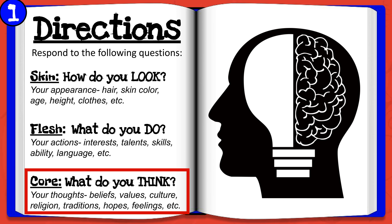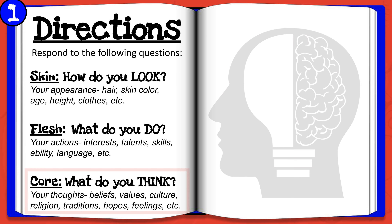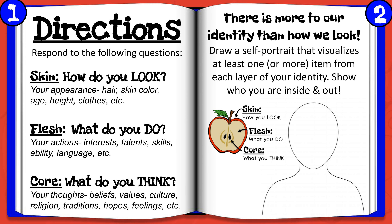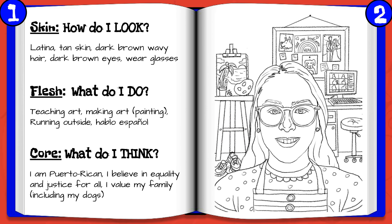Now it's time for you to start reflecting on your own identity. Begin by writing about your outermost layer, tu piel — describe what you look like, your hair, skin color, age, height, clothes, and more. Then begin to reflect on your next layer, tu pulpa. Think about all of the things you enjoy and like to do. What are your actions, interests, talents, skills, abilities, languages spoken, and more? Finally, look deep down into your core, or tu centro. What is it that you really think? Reflect on your beliefs, values, culture, religion, traditions, hopes, and feelings. Think about how you can visually represent all of these different details within a self-portrait drawing.